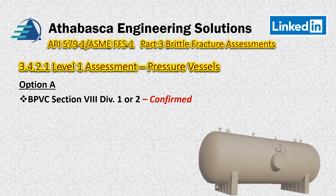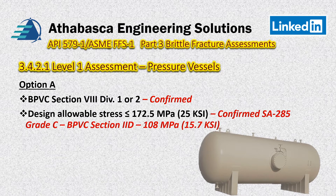Diving into Option A, there are a few things to check. First, is the vessel designed to ASME Boiler and Pressure Vessel Code Section 8 Division 1 or 2? Confirmed — yes it has been. Second, the design allowable stress must be equal to or less than 25 KSI. Reviewing material SA-285 Grade C in the pressure vessel codes Section 2D, the allowable stress based on the coincident temperature comes up as 15.7 KSI. We meet the criterion, so we can proceed with Option A.